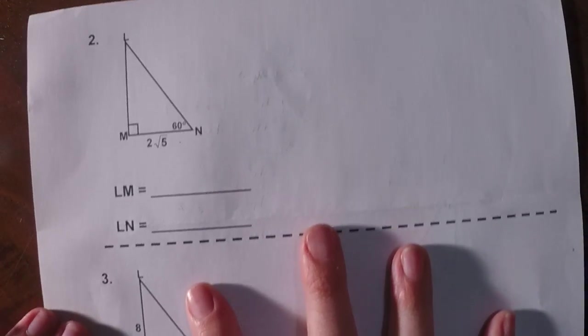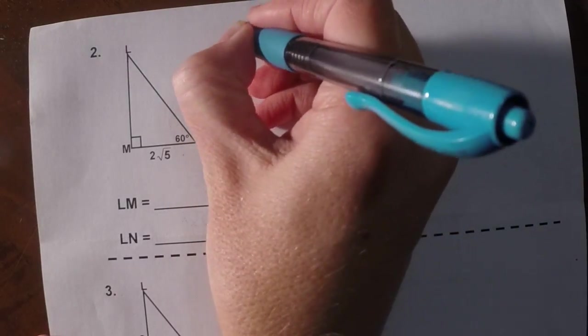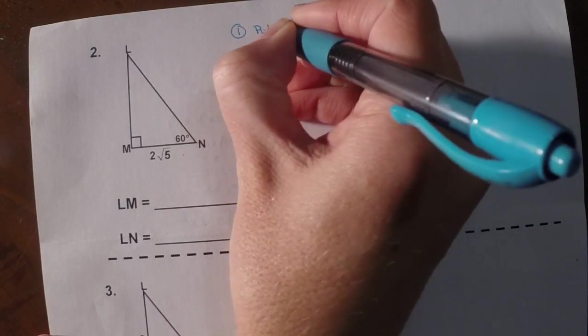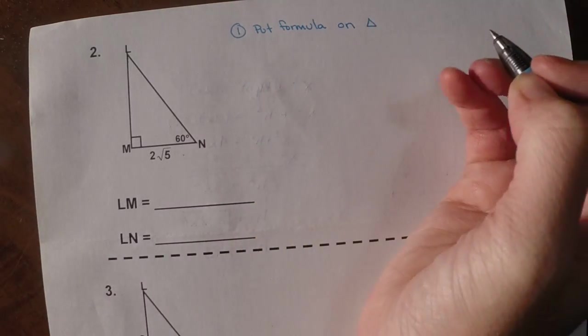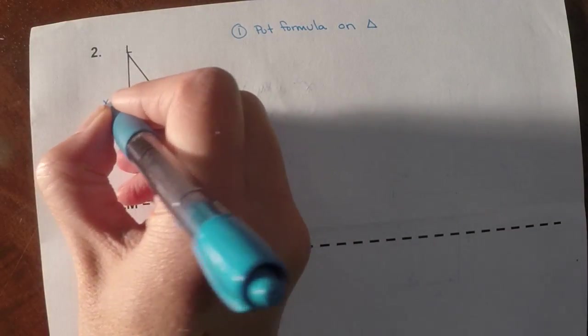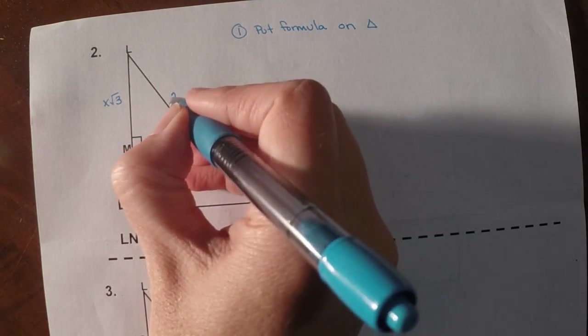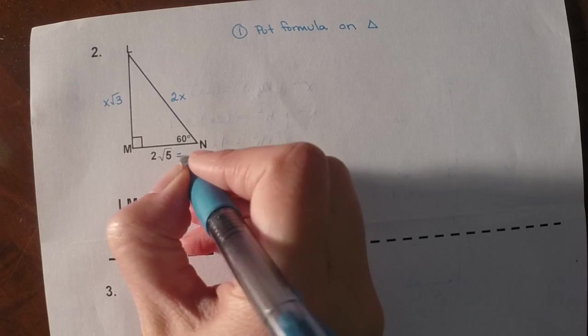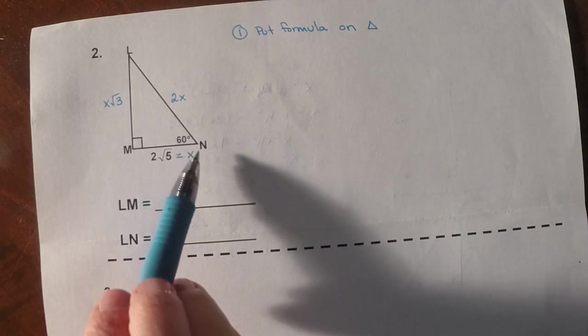So flip it over onto the back, and let's try a couple more examples. So again, our first step is to put the formula on the triangle. And that's how we're going to set it up to solve. So this is our x root 3 side, the long leg. The hypotenuse across from the 90 is always 2x. And then down here, this is our x. So short leg, long leg, hypotenuse.